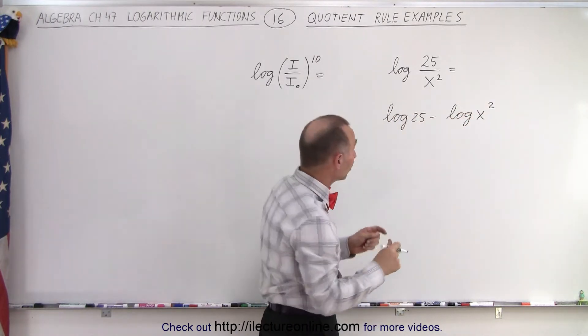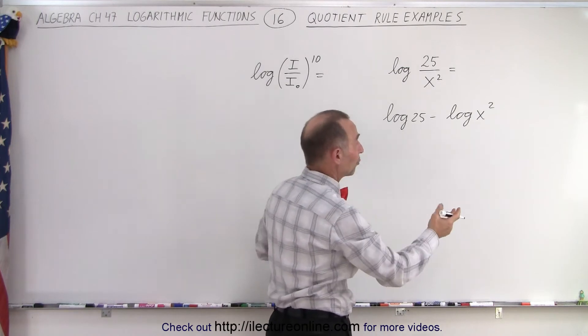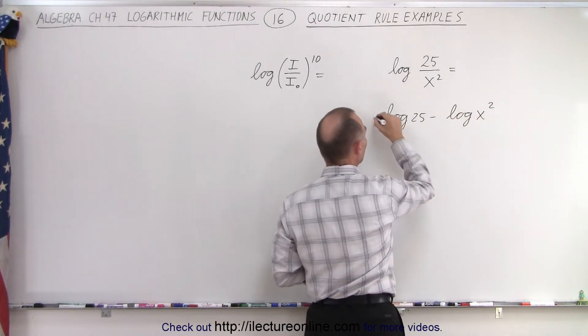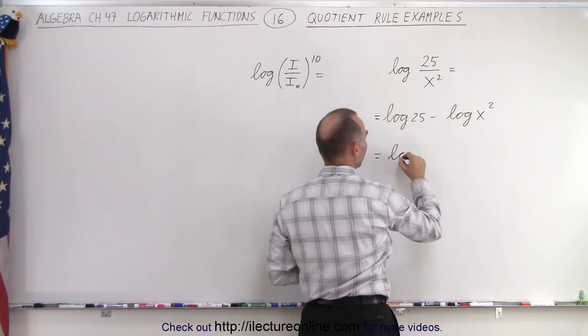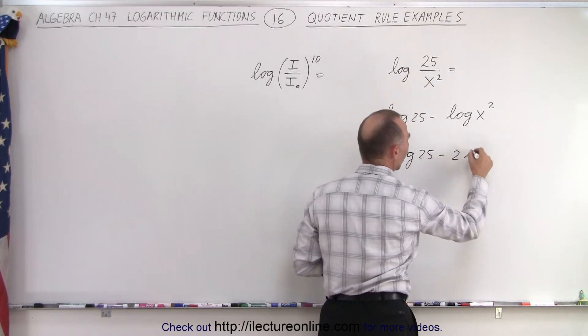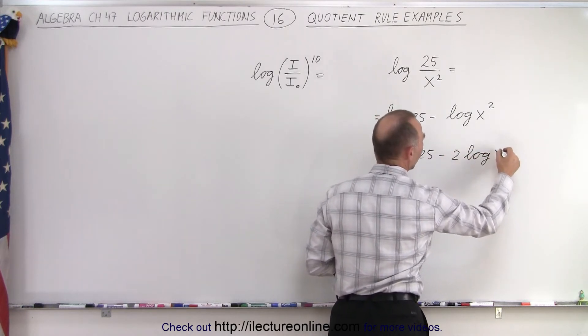And then remember the power rule, which is not part of our example here, but we might as well do it. The 2 up here can actually come in front, and so this can be written as the log of 25 minus 2 times the log of x.